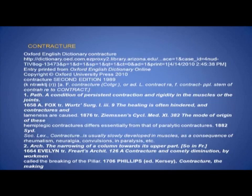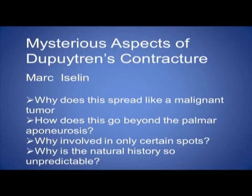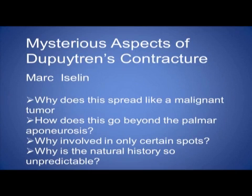Looking at the Oxford definition of contracture — Charlie talked about one of the prior symposiums and the monograph there looked at Dr. Houston's questions. Dr. Islin said that Dupuytren's really spreads into or invades tissue like a malignant tumor, not a benign tumor. And why does that happen? How does it go beyond the palmar aponeurosis? And why in only certain spots? And why is the natural history so unpredictable?